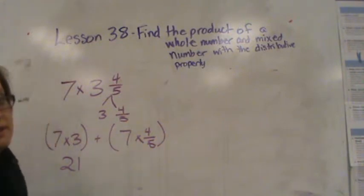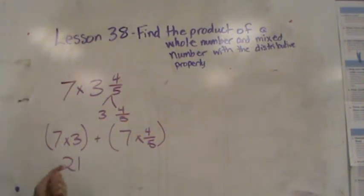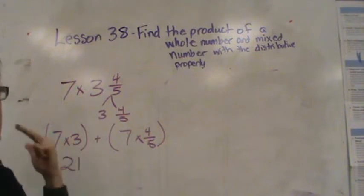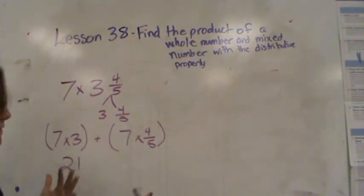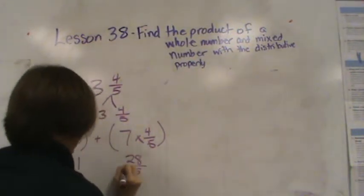7 times 4 fifths, if I counted by 4 fifths 7 times, I have 4 fifths, 8 fifths, 12 fifths, 16 fifths, 20 fifths, 24 fifths, 28 fifths. So plus 28 fifths.